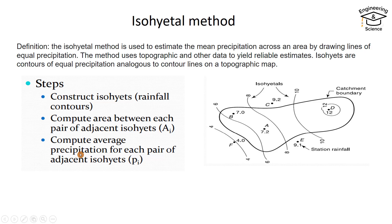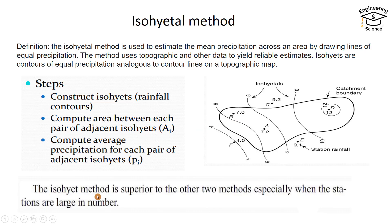Then compute average precipitation for each pair of adjacent isohyetals. For example, this isohyet has 8 millimeter precipitation, this one 6 millimeter precipitation, so the average is 7. This method is better than adjacent polygon method and average method when you have a large number of stations.